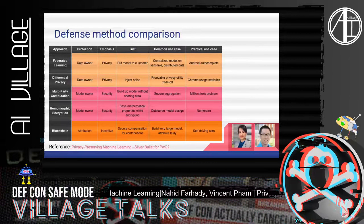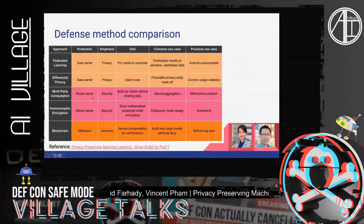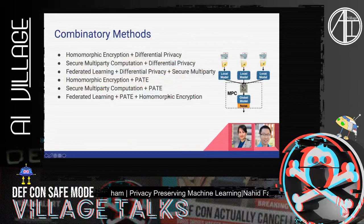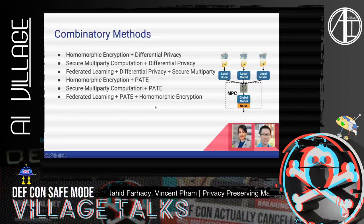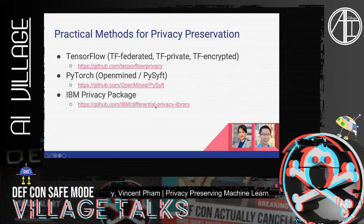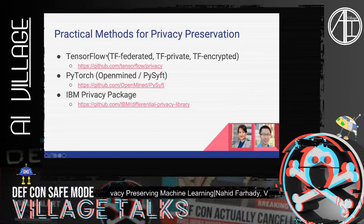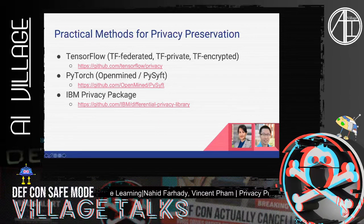Here is a comparison of defense methods in terms of what they emphasize, what they try to protect — whether it is the data owner or the model — and their use cases. Most importantly, most of these methods are really effective when used in combination with each other, one from each category. For example: homomorphic encryption and differential privacy, SMP and differential privacy, or PATE and federated learning plus homomorphic encryption. There are already packages available such as TensorFlow Privacy, PyTorch, or IBM Privacy. We'll show an example of how to use one of these packages in a real-world sample.